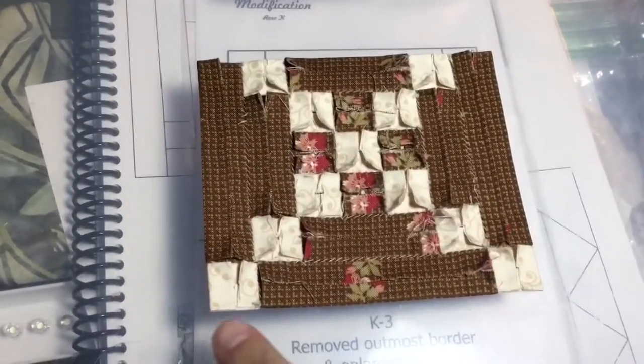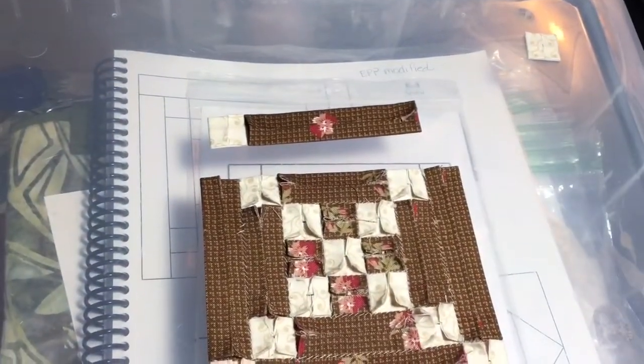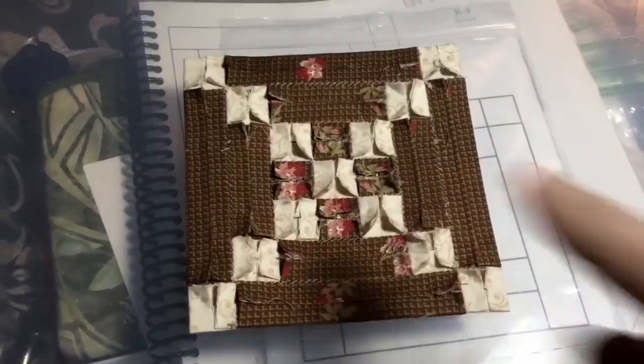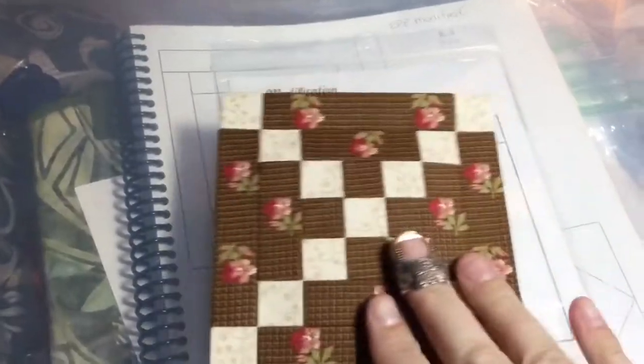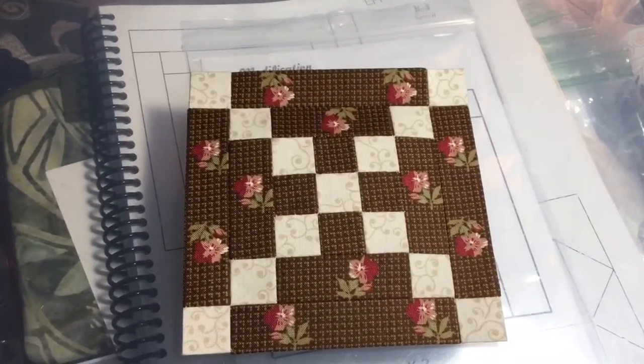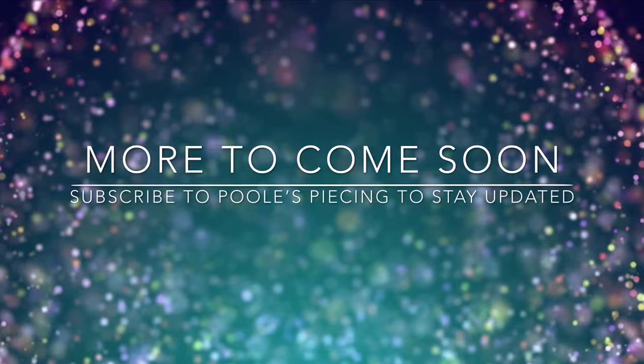So now I've got the bottom section attached and I just need to attach the top section. So now I've got the top section attached and that completes my K3 block.